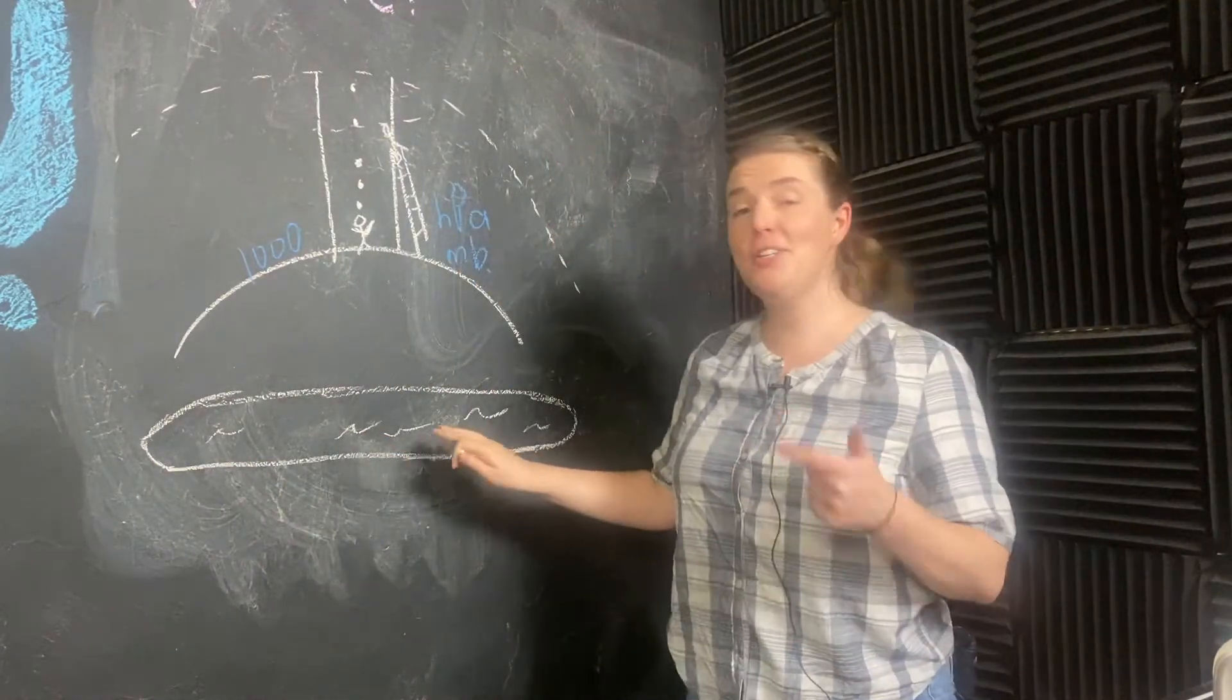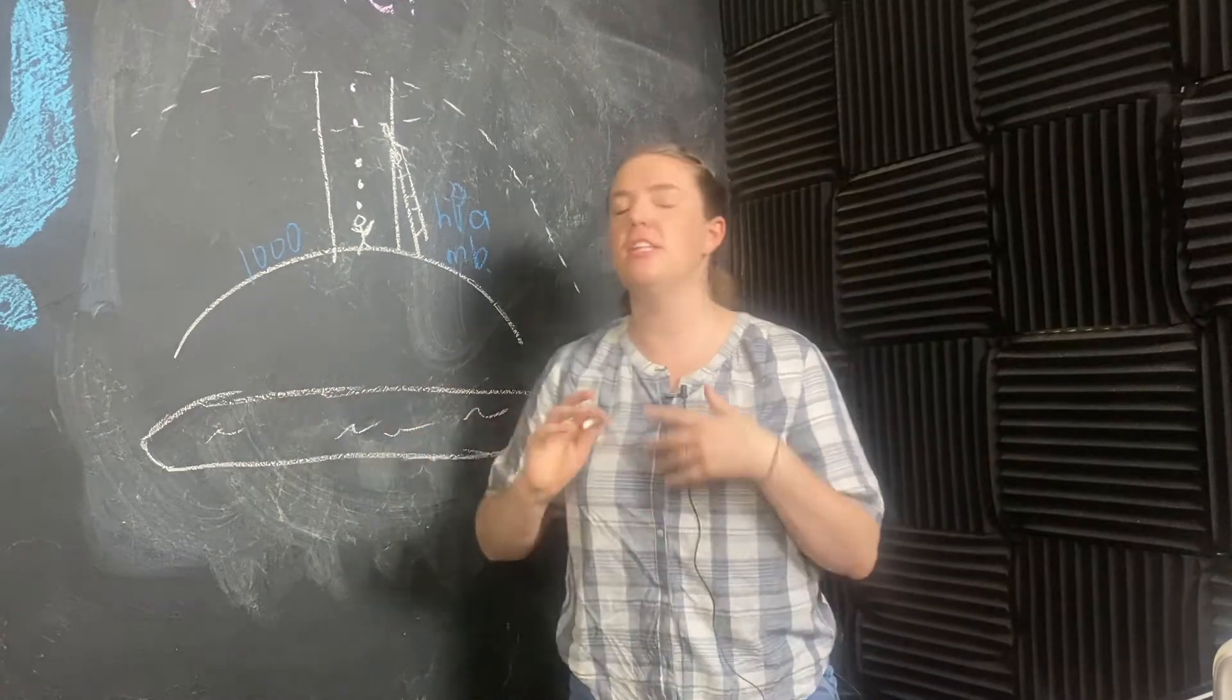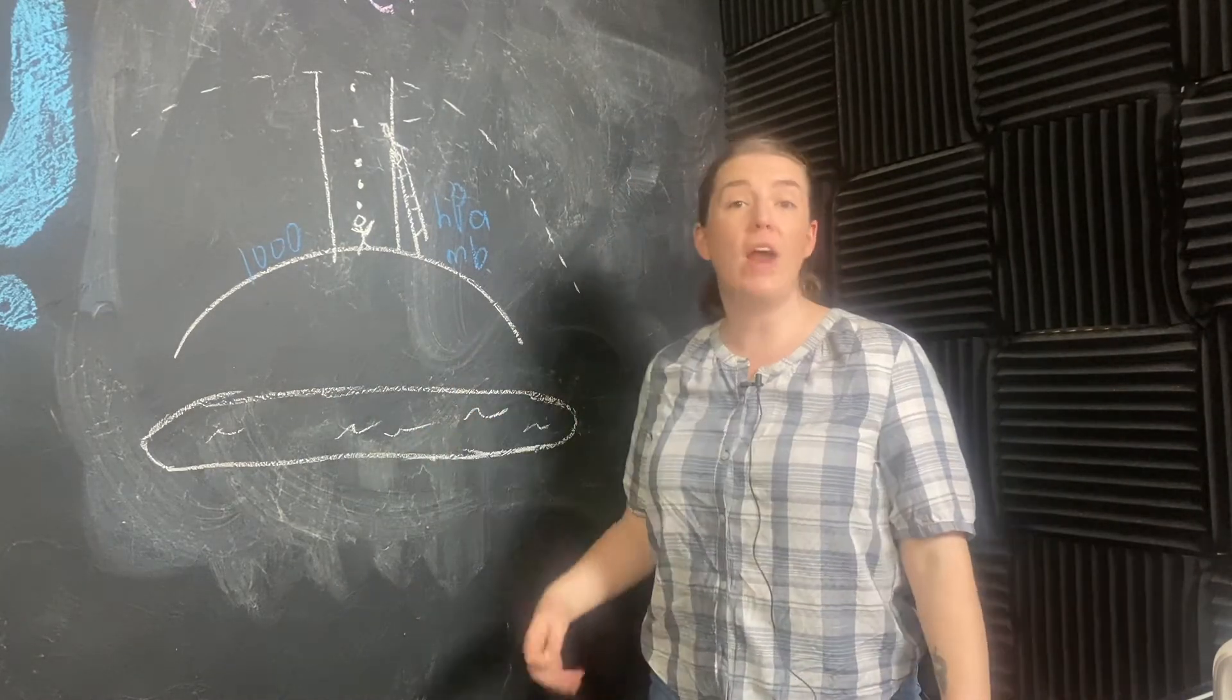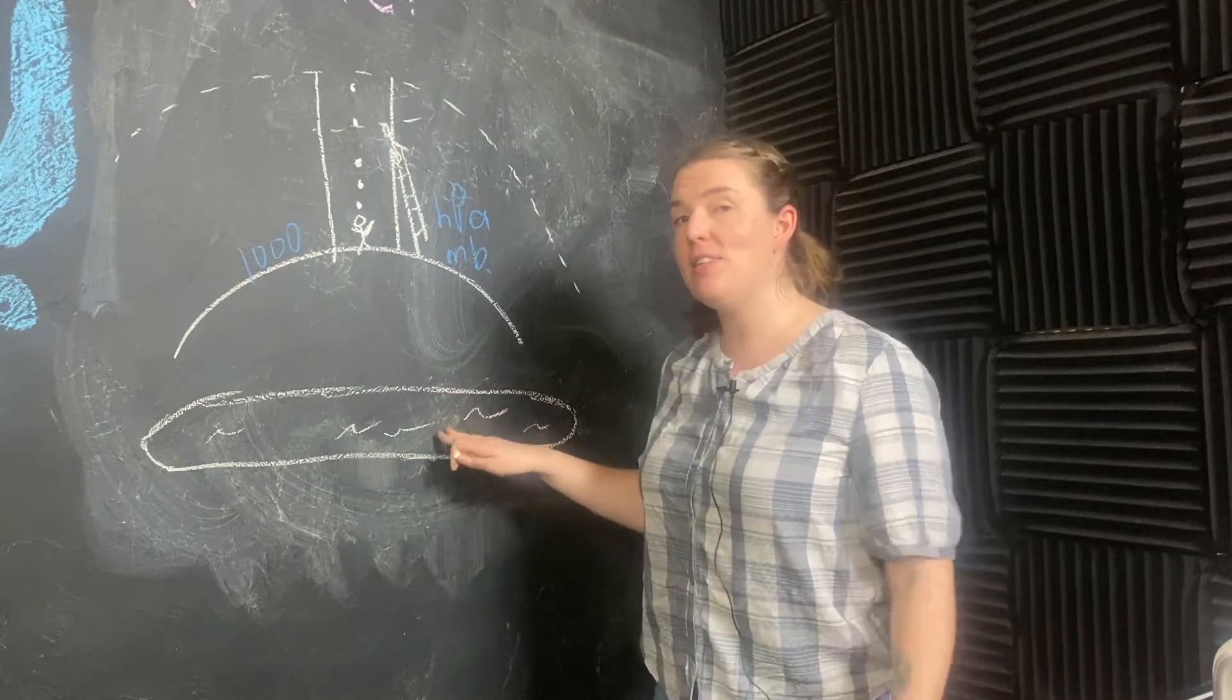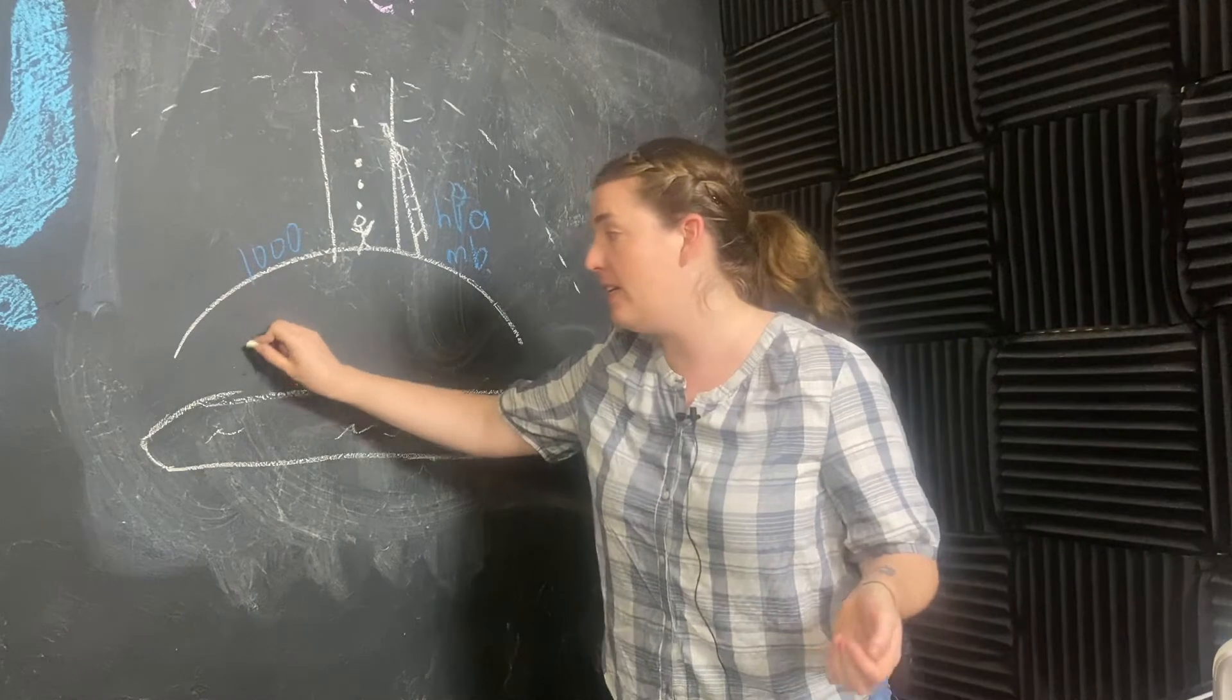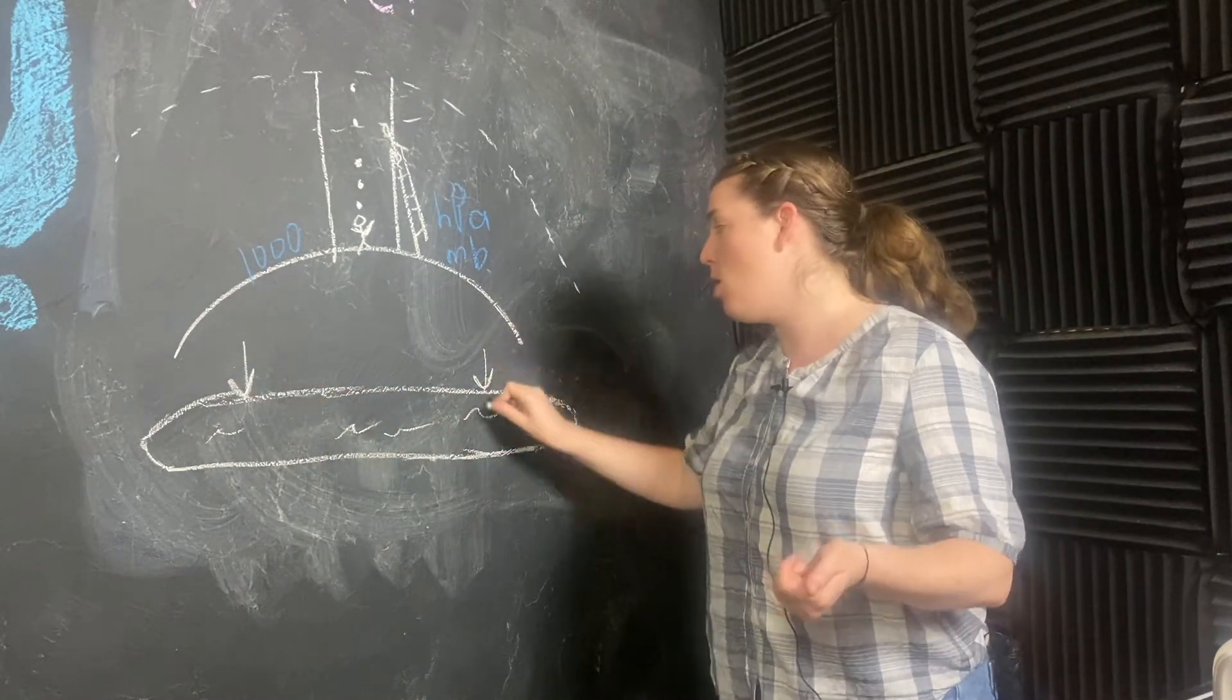This blob I just drew, think of it as like a container that's filled with a liquid. Honestly, I think of it as like a waterbed. Right now, as I've drawn it, the pressure on the surface of this waterbed is pretty constant. The pressure there is about the same as it is over here.